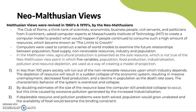Unlike the Malthusian view where agricultural production is the sole resource, the neo-Malthusian Limits to Growth model uses five variables: pollution, food production, industrialization, pollution, and resource depletion. The model concludes that in less than 100 years, society will run out of the non-renewable resources upon which industry depends. The depletion of resources will result in a sudden collapse of the economic system, resulting in massive unemployment, decreased food production, and a decline in population as the death rate soars — the characteristic behavior being overshoot and collapse.